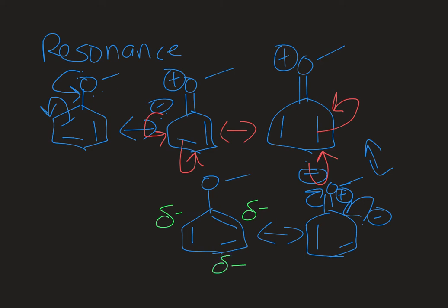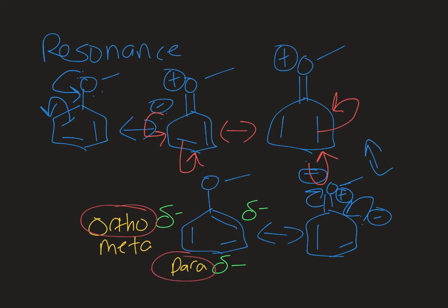The positions on a benzene ring that are right next to the substituent are called ortho. The position that's one away is called meta, and the position that's at the bottom is called para. So an electron donating group pushes electron density into the ring and that electron density is more localized on the ortho and para positions. Those two positions are more shielded and so those signals are going to be more upfield. The position right next door to the substituent generally sees the bigger impact.